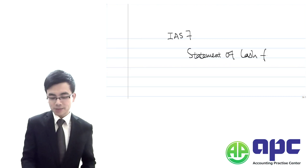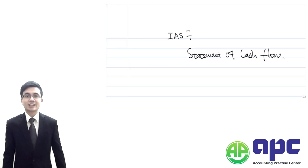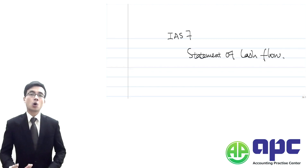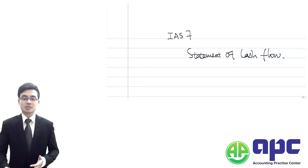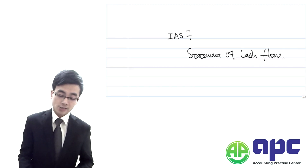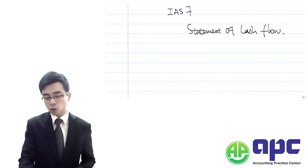The IAS number 7 says for the statement of cash flow there will be no restricted format. But according to the guidance given by IAS number 7, it should include the following aspects.